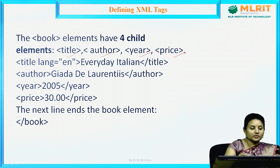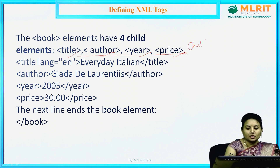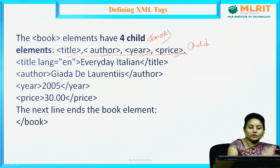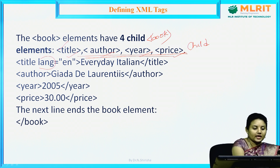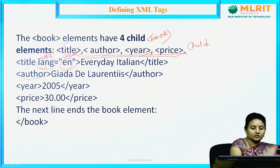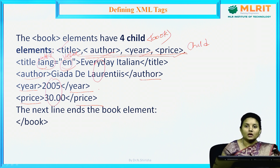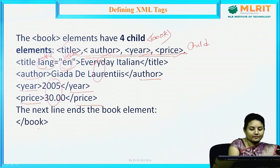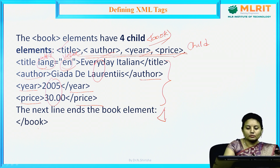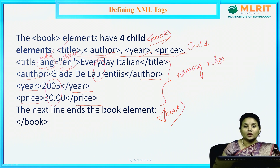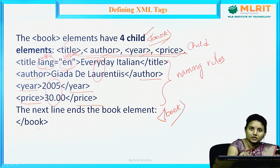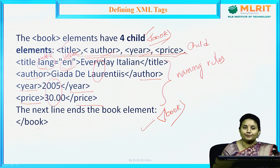The child elements are title, author, year, and price — these are all child tags inside the book element. For title, language is an attribute and 'en' is the value for English. The text content between opening and closing tags — for author, year, price — are the values of those elements, not attribute values. The book tag must be closed after all its child tags. This is part of the XML naming rules.